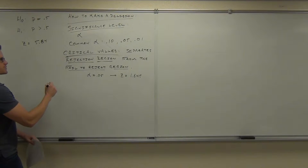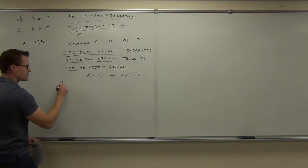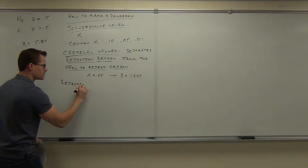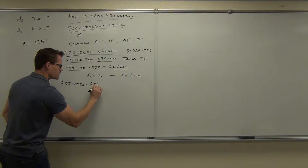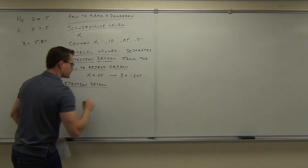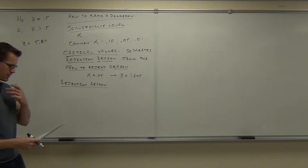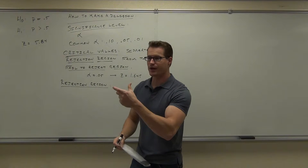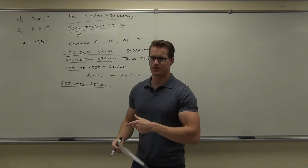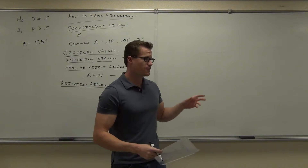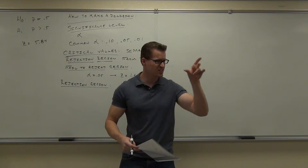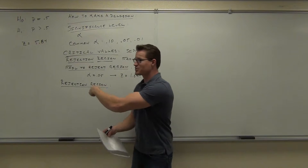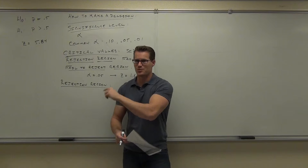Now, here's what the rejection region does. We just spoke about the critical value that separates the rejection region from the failed-to-reject region. It's the region that if our test statistic falls in that area, we get to reject the null hypothesis. That's called the rejection region. If you fall in the failed-to-reject region, then your test statistic's in that area, it's saying you don't have enough evidence to reject the null hypothesis.